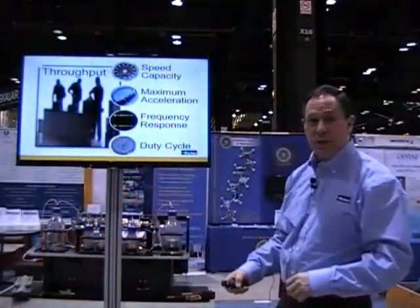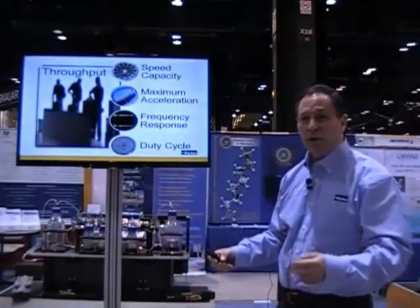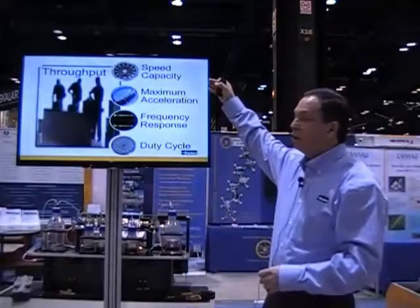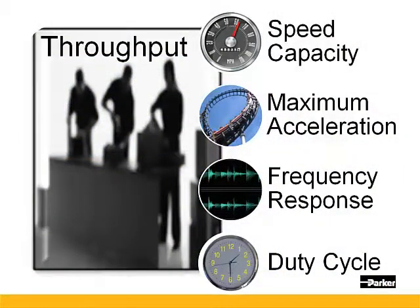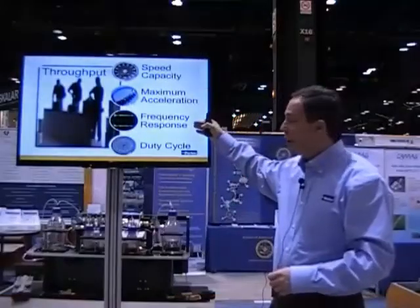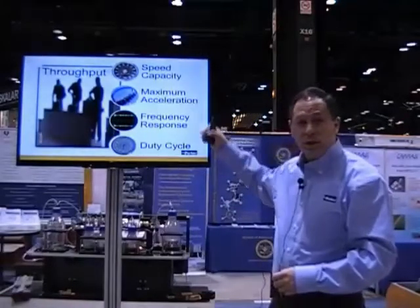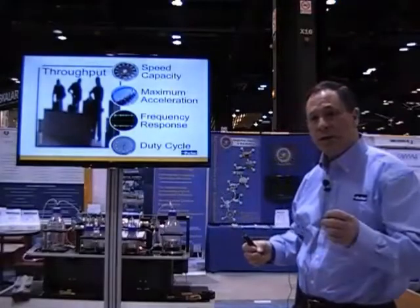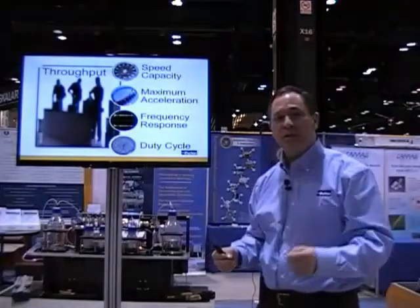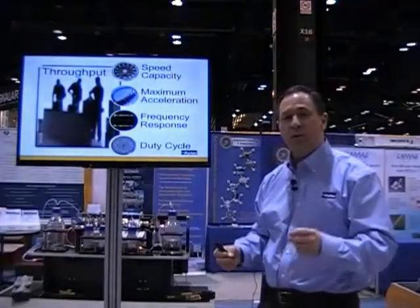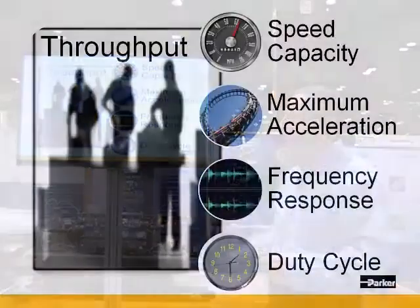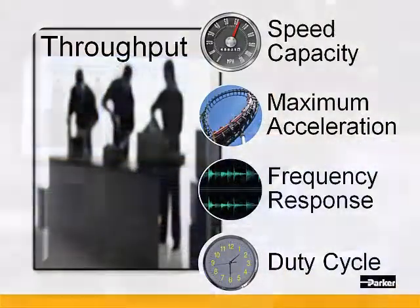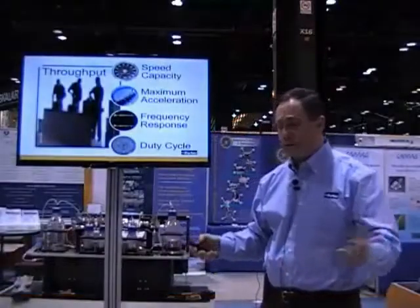From a throughput standpoint — how fast you have to get your process done — you need to consider the speed capacity: how fast can your drivetrain actually produce motion? Also the maximum acceleration, the frequency response, which has to do with the spring rate or stiffness of the drivetrain and how quickly it can respond to change requests, and the duty cycle — how long can the drivetrain run without a rest?